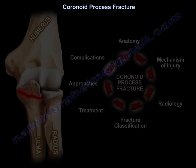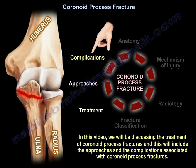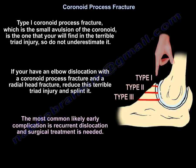In this video we're going to be discussing the treatment of coronoid process fracture, including the approaches and the complications. The coronoid process fracture is connected to the terrible triad and also to radial head fractures, so you're going to find some overlap between the three entities. Type 1 coronoid fracture, which is the small avulsion of the coronoid, is the one you will find in terrible triad — so don't underestimate it.